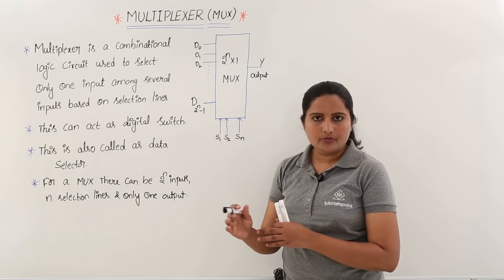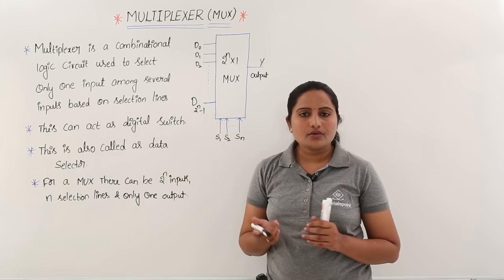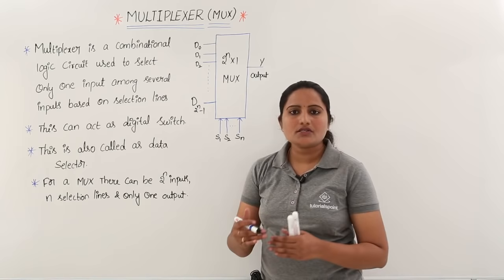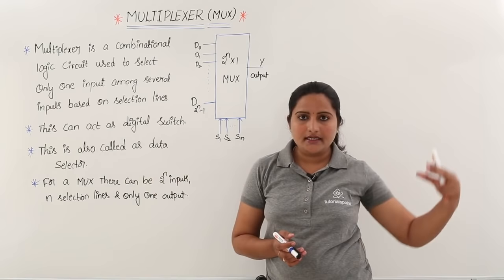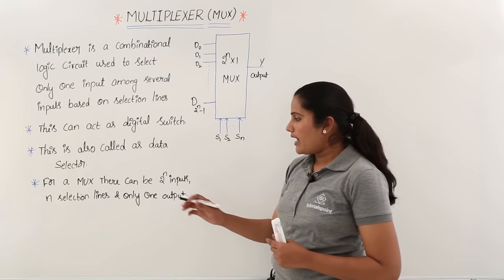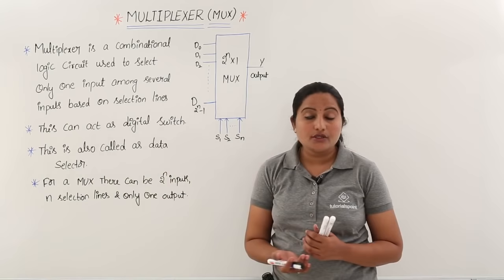A multiplexer can act as a digital switch — the input is switched to output based on the selection line. It is also called a data selector, because which data we need to select at the input side is decided by the multiplexer. For a MUX there can be 2-power-n inputs, n selection lines, and only one output.